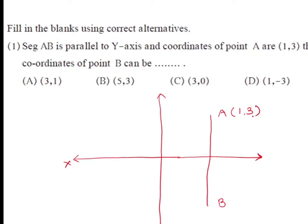The coordinates of A are given to be (1, 3). If we draw a perpendicular to the x-axis we get the value 1, and if we draw a perpendicular to the y-axis we get the value 3. The question asks which of the four options can be the coordinates of point B. We have to check whether B is (3,1), (5,3), (3,0), or (1, -3). Let's check them one by one.